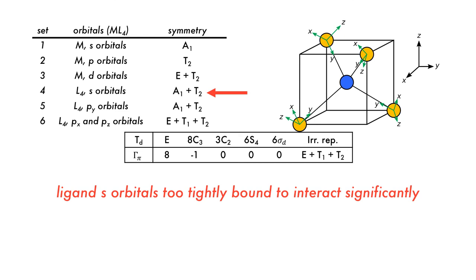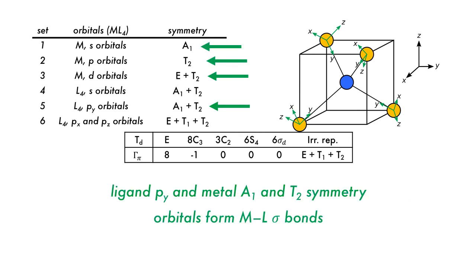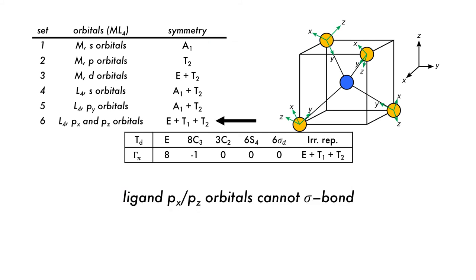The ligand s orbitals can often be ignored if the ligand is strongly electron attracting, as they are very tightly bound, and as we know, the ligand py and metal orbitals with A1 and T2 symmetry combine to make the metal ligand sigma bonds. There are other orbitals too, the ligand px and pz orbitals with symmetry E, T1 and T2. These are orthogonal to the bond axis and thus cannot engage in sigma bonding.